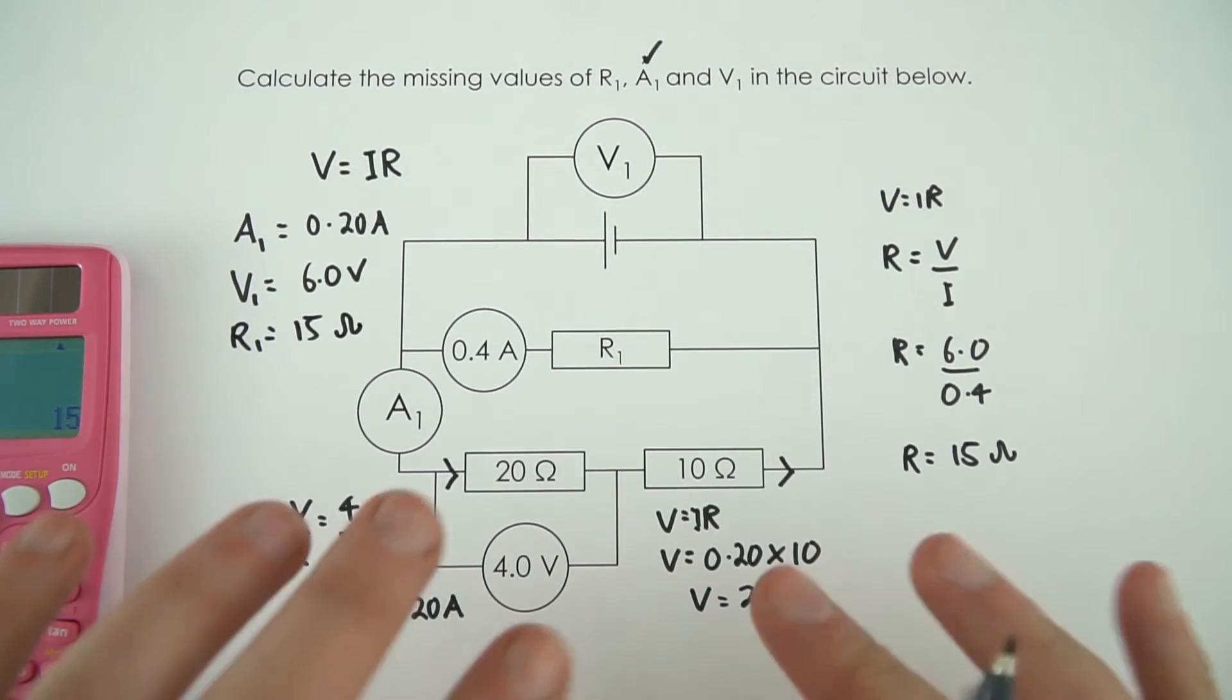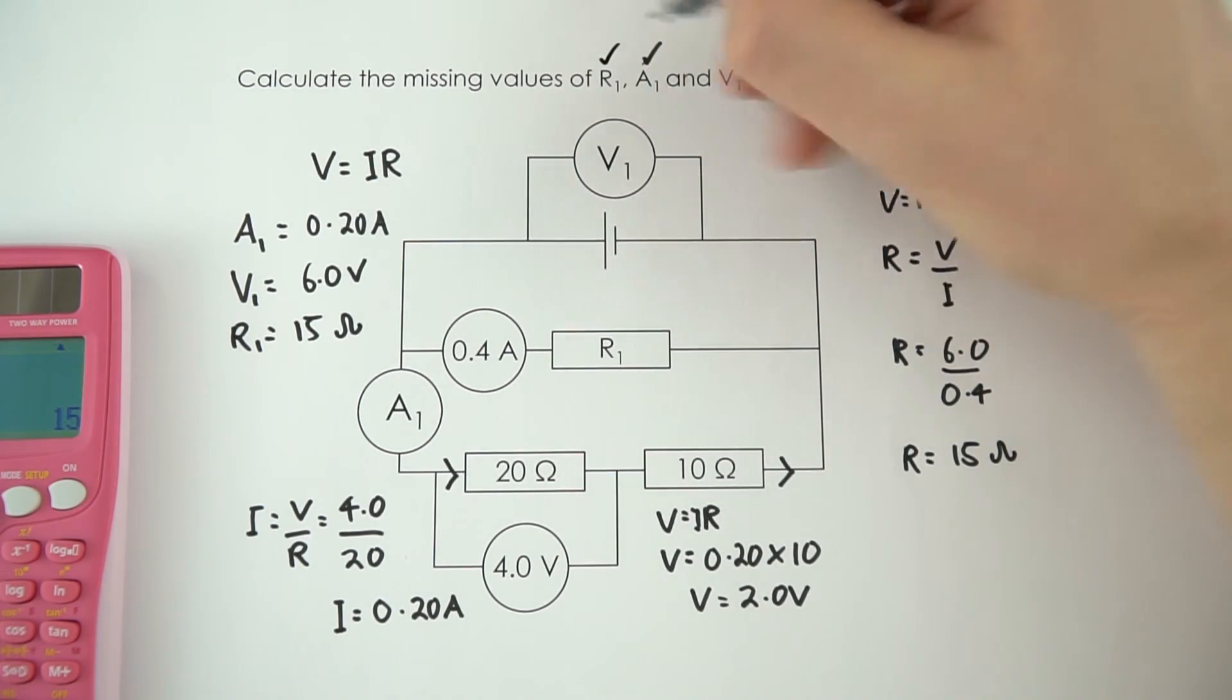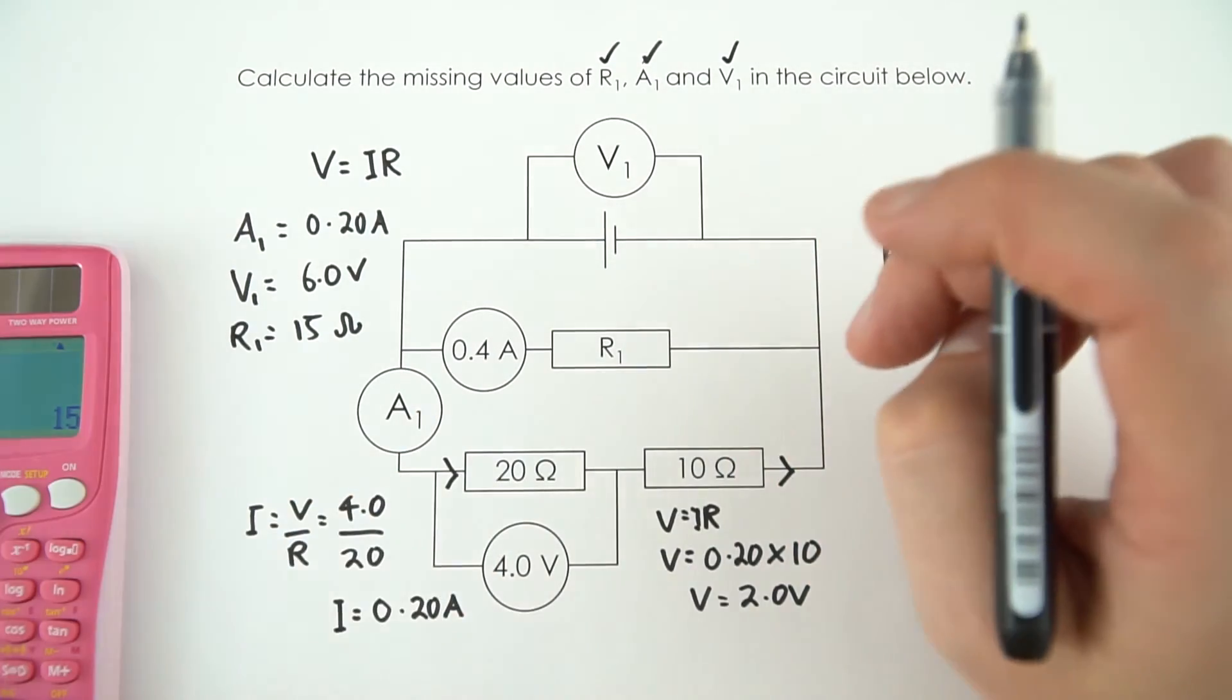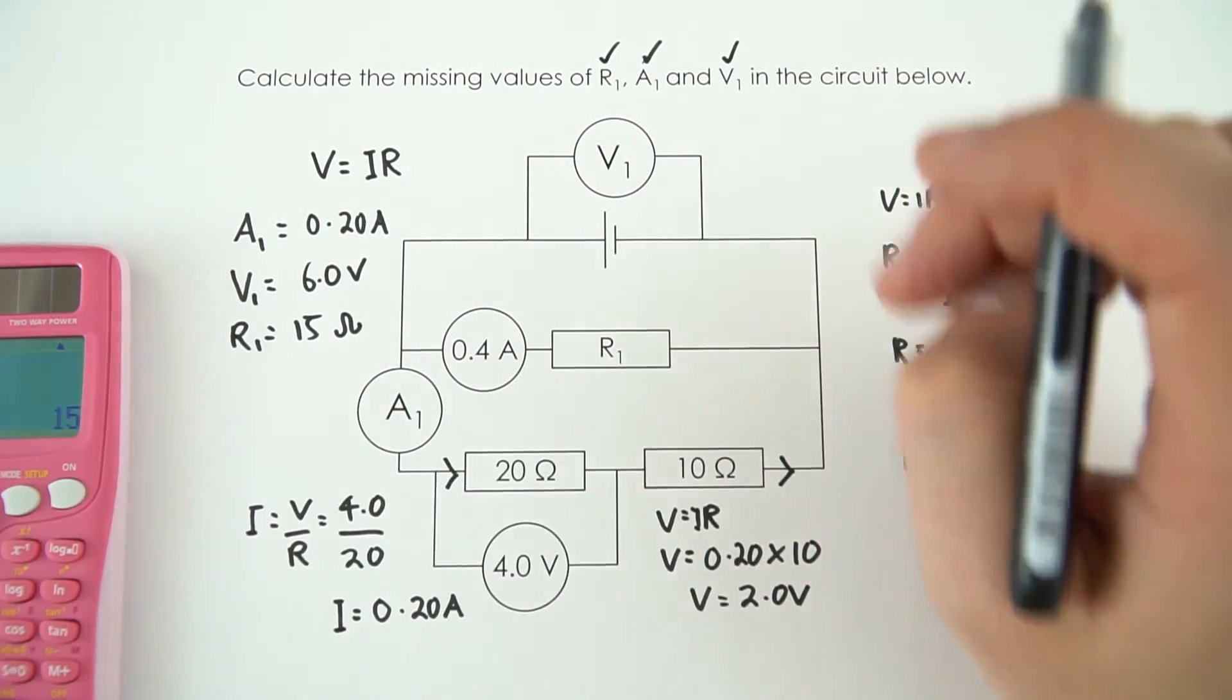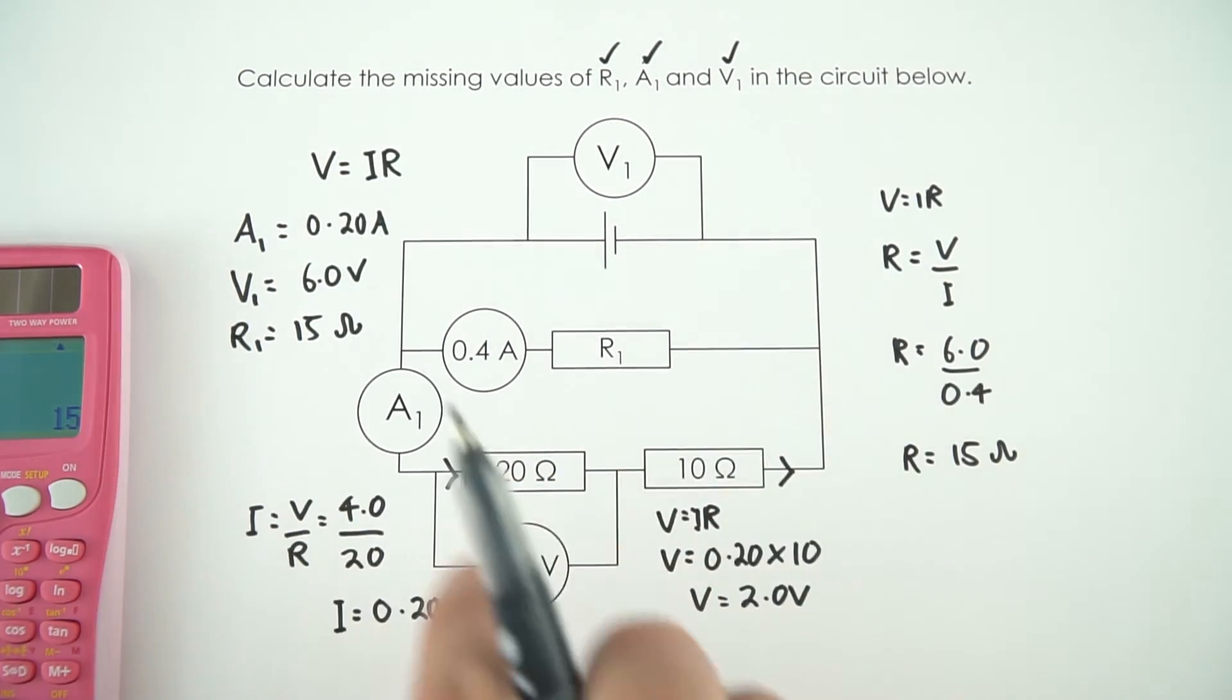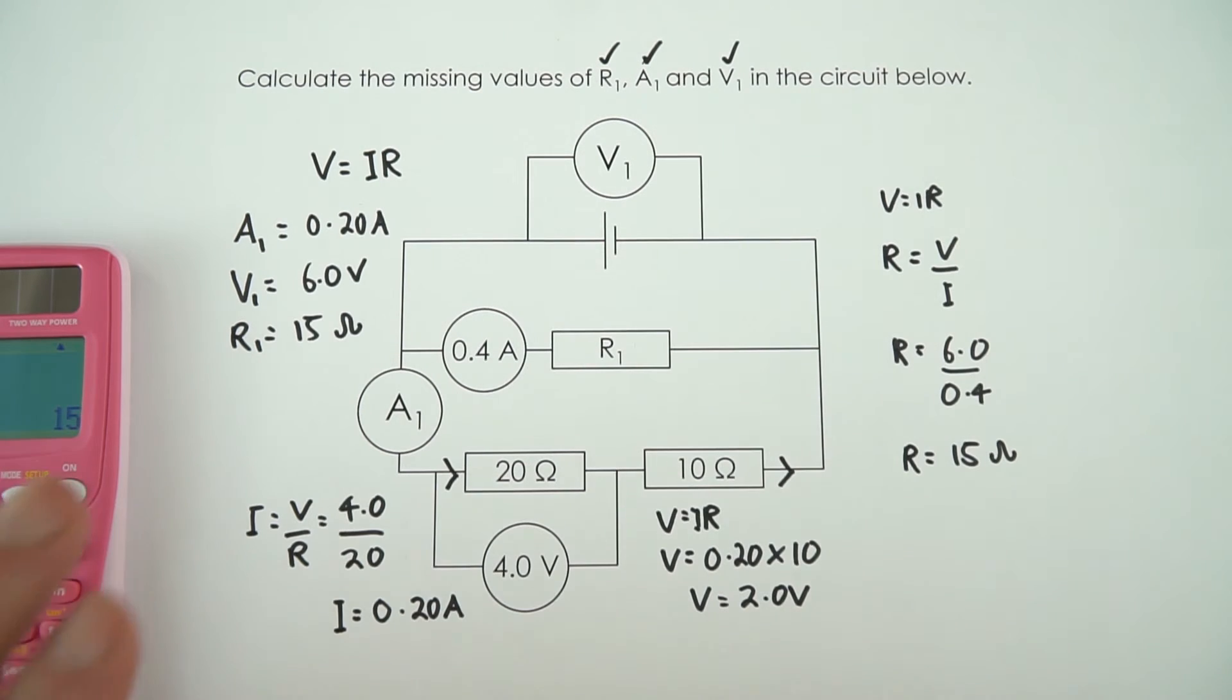So a lot going on. You probably wouldn't get a question that asks you to do all of this stuff just straight off. It might structure your approach, asking you to find out this and this and this. But all you're doing is just applying this equation, V equals I times R, to different parts of the circuit, and you're going to start to fill in the gaps until you get to the final answer.